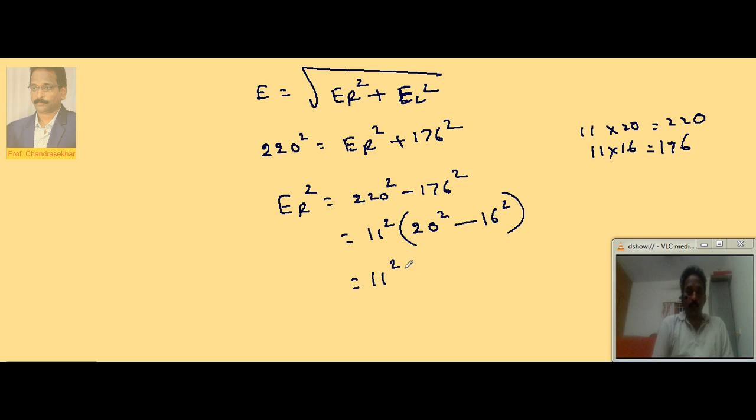Therefore, 11 squared into this I will write as A plus B into A minus B. So A plus B, 20 plus 16 is 36, A minus B, 20 minus 16 is 4. Or it is 11 squared into 6 squared into 2 squared.